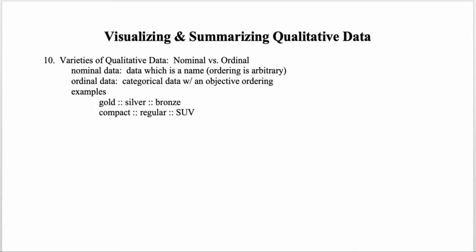Examples of ordinal data include Olympic medals — ordered gold, silver, bronze for first, second, and third place. Even if we don't know how far apart the time differences are, we know there is an actual ordering. Another example is car rental size categories: compact, regular size, or SUV, which have an inherent order in vehicle size.